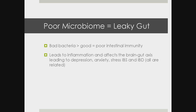When we have a poor microbiome — when bad bacteria is in excess over good bacteria — we have poor intestinal immunity, also known as leaky gut. This can lead to inflammation, and because the brain and gut are connected, it could affect that connection, leading to anxiety, depression, stress, and IBS. Making sure we have a good balance of our gut bacteria is crucial.